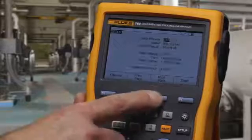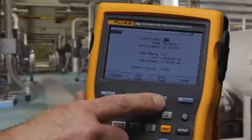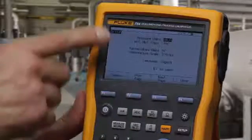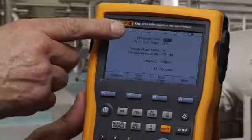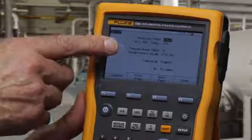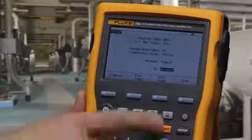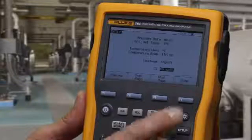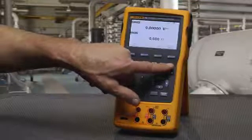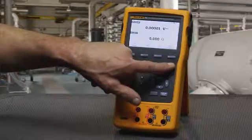We can also set the time and the date. We can select pressure units, change pressure units, and temperature units, and then put our name into the calibrator to personalize it. And the backlight has a low, medium, and high setting.